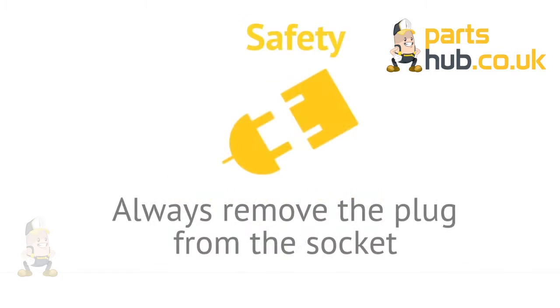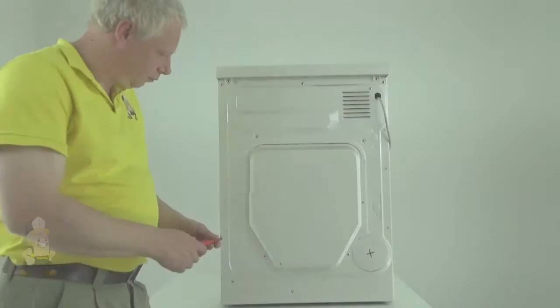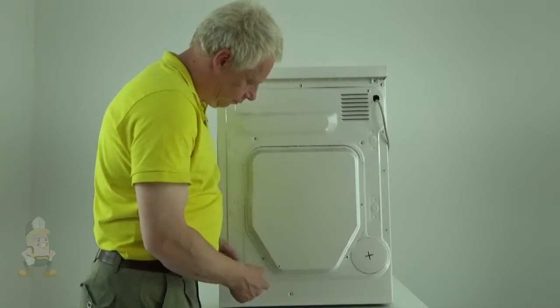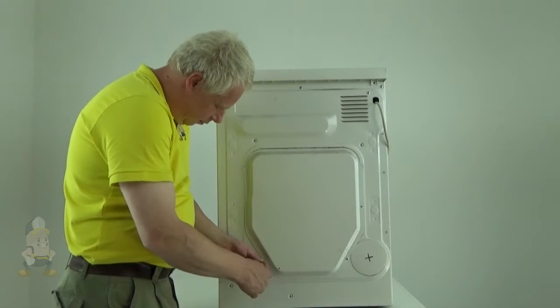Always ensure your own safety by unplugging the power cord and turning off the tap. Turn the dryer so that you have good access to the back of the machine.